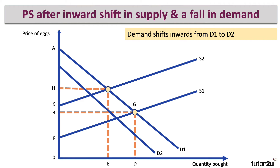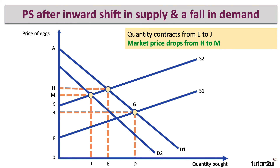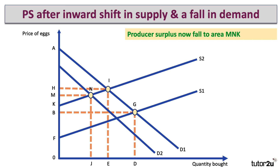Let's throw in another factor — a fall in demand. Maybe consumer fears about egg safety or something similar. So demand shifts in from D1 to D2. This is also potentially bad news for the producer and their surplus. Now we have S2 and D2. The quantity will fall from E to J, and the market price will come down — a new equilibrium forms and the market price falls from H to M. So now the producer is selling less and at a lower price. Producer surplus now falls to area MNK, a loss of HINM. So a fall in demand and rising costs have caused a significant fall in producer surplus.